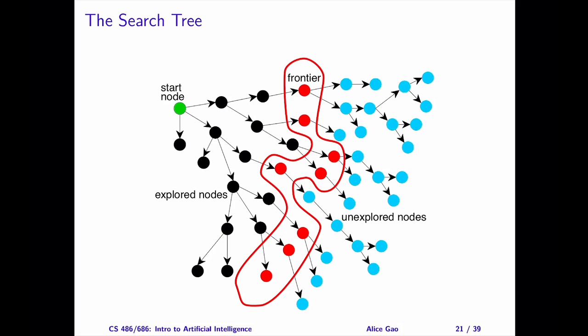At each step, we select one path from the frontier and check whether it is a goal state. If it is not a goal state, we will expand it. Expanding the state means applying the successor function, generating all of its successors, and adding the successors to the frontier. Then, the process repeats.